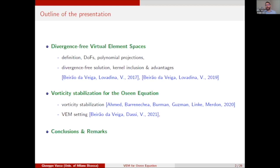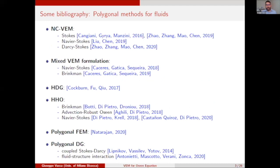In the presentation, in the first part I will recall the basic concepts of the so-called divergence-free virtual elements for the Stokes and Navier-Stokes equations — in particular the definition, the degrees of freedom, the construction of the projections, and its main properties: the divergence-free property of the solution, the kernel inclusion, and its advantages. In the second part I will present the vorticity-stabilization for the Oseen equation, and in conclusion I will draw some remarks.